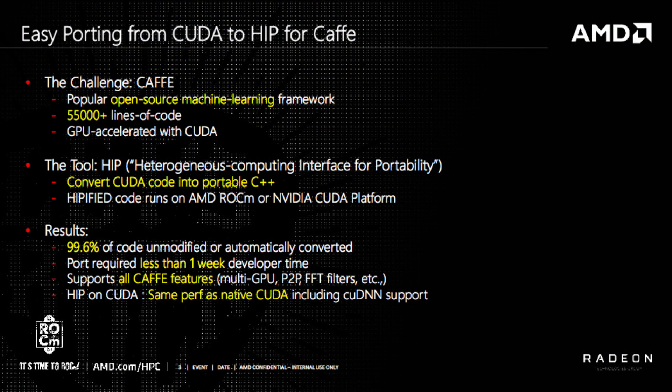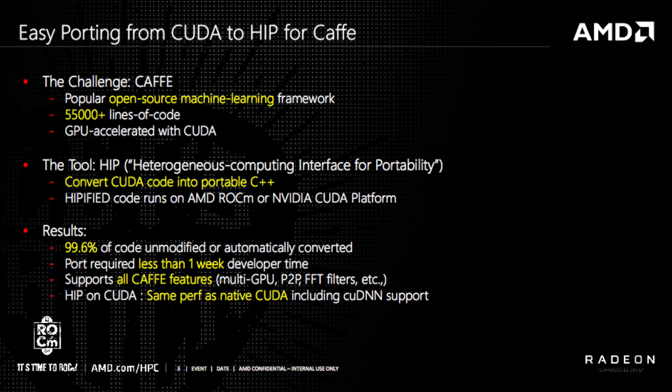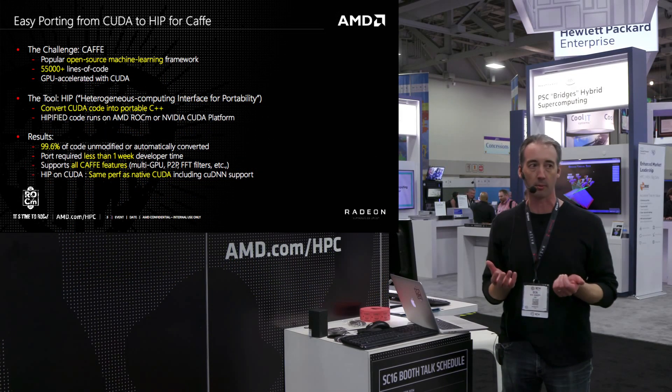HIP is designed to take CUDA code and port it to an intermediate C++ dialect called HIP. We took CAFE, a popular open source machine learning framework — about 55,000 lines of code optimized for CUDA. We ran it through our HIP tools and were able to convert 99.6% of the code automatically.